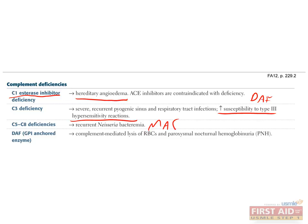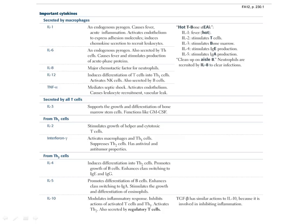A helpful way to start understanding the various cytokines is first by separating them on the basis of where they are produced. Macrophages and T cells are the main cell types that produce cytokines.